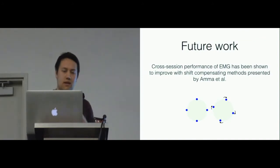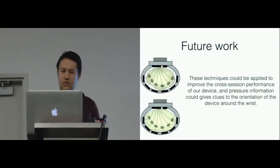We didn't actually test the cross-session performance of our device, but there have been shown to be shift-compensating algorithms in the past, and this could quite easily be used for our current work. But furthermore, because we have pressure data which senses the shape of the wrist, you could use this to infer the orientation of the device around your wrist to help get the orientation shift.